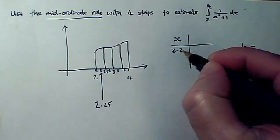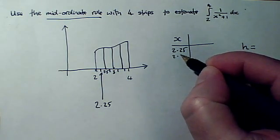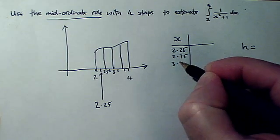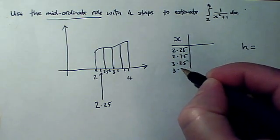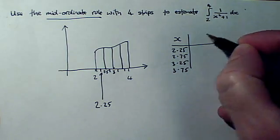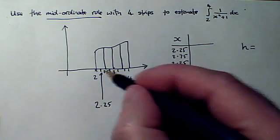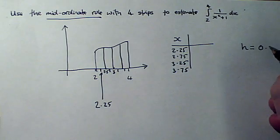So it's going to be 2.25, 2.75, 3.25, and 3.75 are my x-values. And the width of the strip, h, is clearly 0.5.